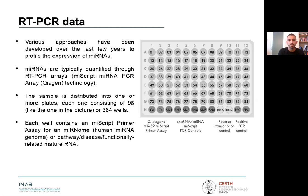MicroRNAs are typically quantified through a real-time PCR array methodology, which is supported by Qiagen technology. Throughout the process, the sample is distributed into one or more plates, each one consisting of a standard number of wells. The picture on the right shows us an example of how this plate actually looks like. Each well contains a specific primer assay for a human microRNA, which eventually quantifies the expression of a specific microRNA.